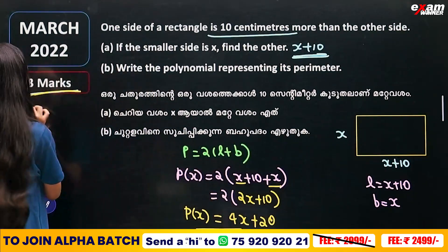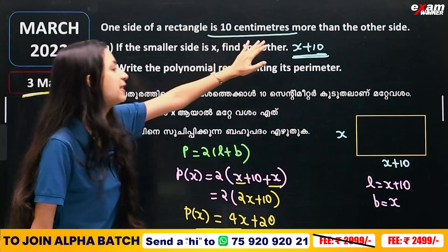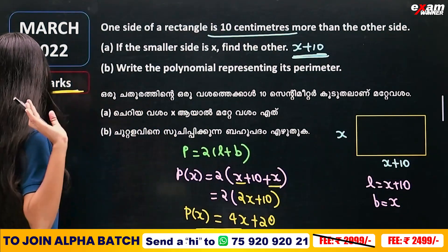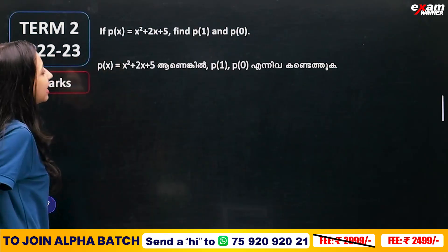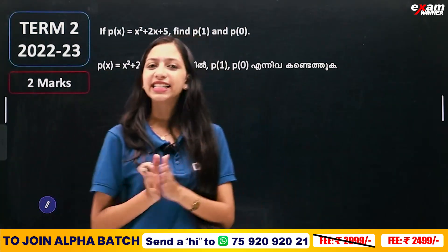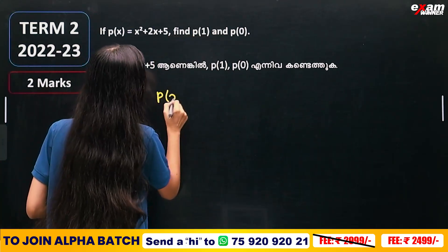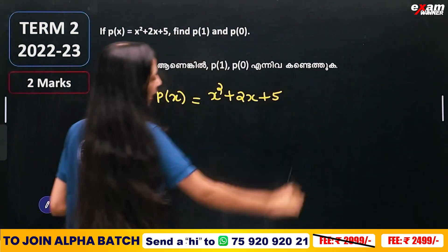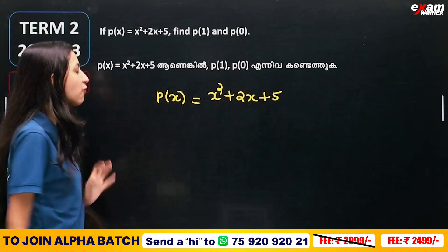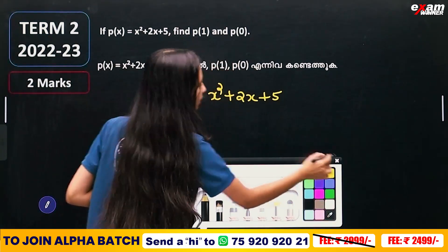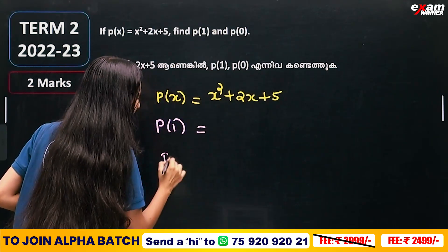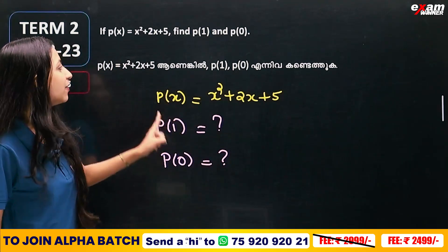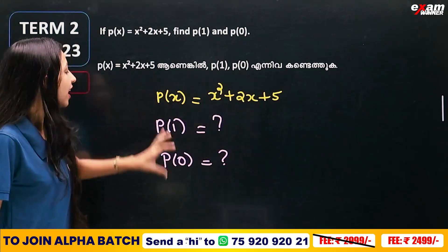If you have 3 marks, you can score 3 marks — that is very simple. This is a polynomial: x squared plus 2x plus 5. In this polynomial, what is p of 1 and what is p of 0? You can score 3 marks for these straightforward substitution questions.